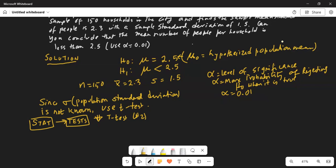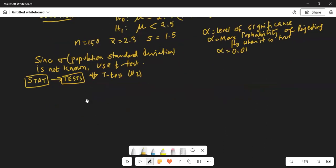So, stat, highlight test, and then scroll down to t-test. So, mu 0 is the value in the null hypothesis is 2.5. First input should be on stats. And let me make clear that input output is on stats. Why? Because we know the summary stats of the sample. Mu 0 is the hypothesized value in the null hypothesis, which is 2.5. X bar is the sample mean, is 2.3. Sx is the sample standard deviation, is 1.5.